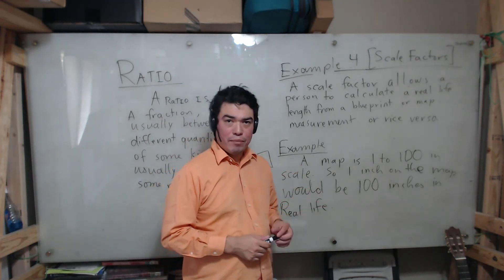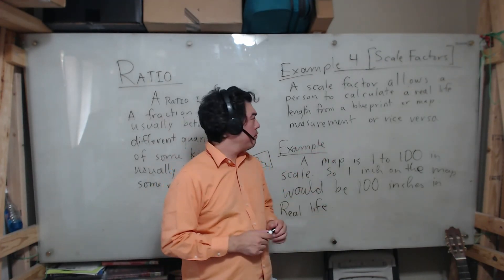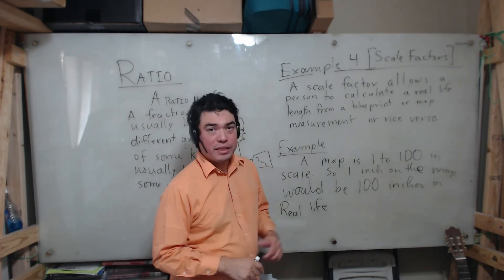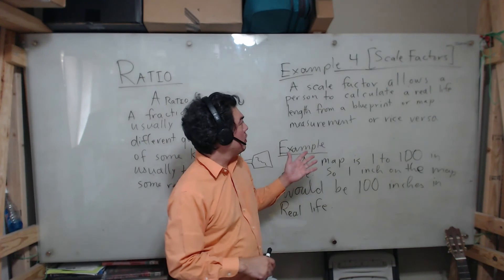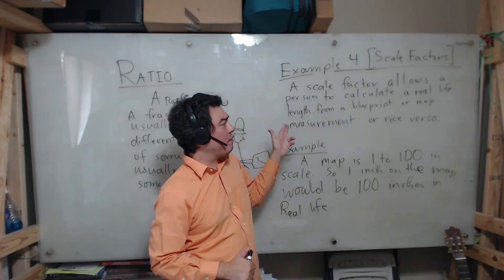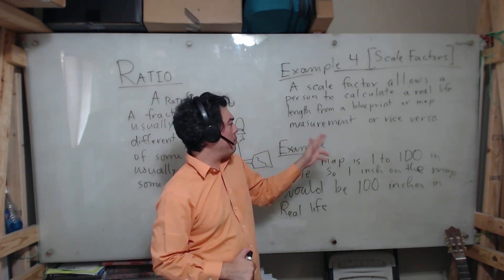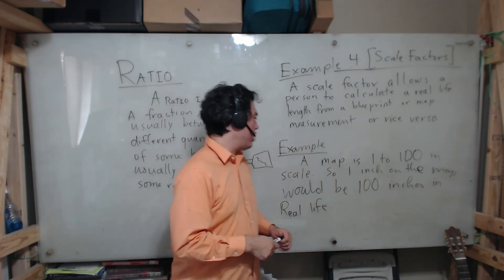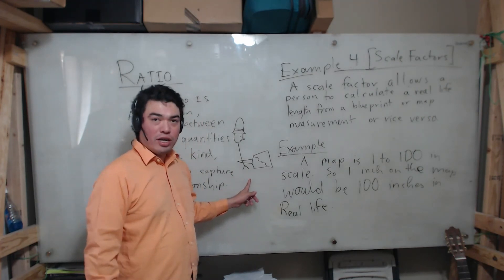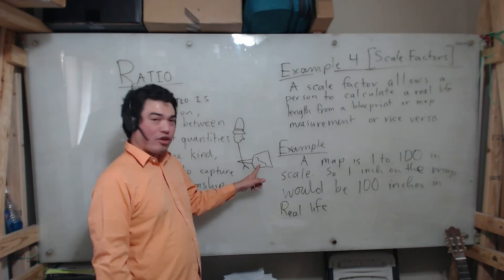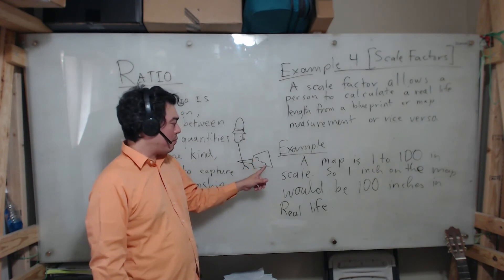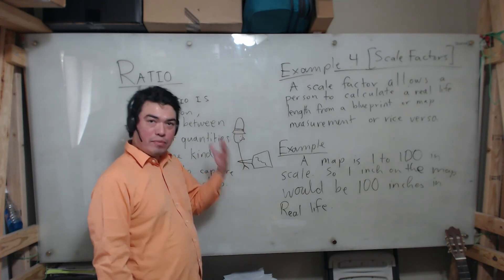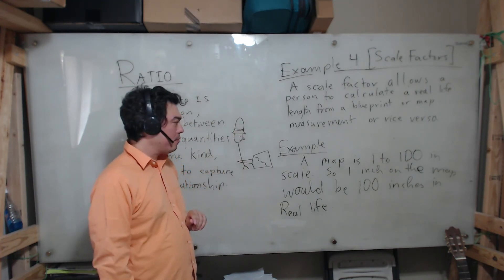Here I have another example. This is very common, I'm sure a lot of you will be familiar with this. This is known as a scale factor. A scale factor allows a person to calculate a real-life length from a blueprint or map measurement or vice versa. This often happens when you're on safari and you're looking at your map and you see the path from where you are to where you want to go. In this example, a map is 1 to 100 in scale, so one inch on the map would be 100 inches in real life.